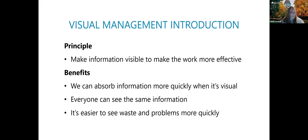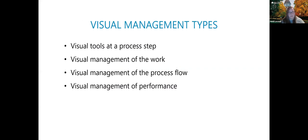I will acknowledge that some people have a visual impairment, so that can be a slightly different situation — I'll give a few examples about accessibility and visual management as we go. I want to talk about four types of visual management. These are my categorizations because I find them helpful for thinking about visual management in different ways. I'm going to show you: visual tools at a process step, visual management of the work, visual management of a process flow, and visual management of performance. This categorization helps me know what type of visual management I might need in a given situation.